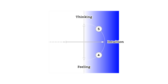Intuitive types are divided into the following two major categories: the NT temperament and the NF temperament. NT is intuition and thinking, and NF is intuition and feeling. Unlike sensing types, the temperaments of intuitive types are not divided into judging and perceiving, but thinking and feeling. Type 5 tends to have the NT temperament, and Type 4 tends to have the NF temperament. The former is called the conceptualizer, and the latter is called the idealist.